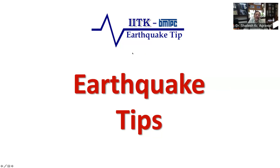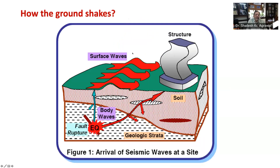Today we are going to look at Earthquake Tip number 2, which is on how the ground shakes. As you can see in this figure, earthquake is a violent shaking of ground due to release of large elastic strain energy through sudden slip at faults. From this fault, this energy travels as seismic waves. Seismic is another terminology for earthquake.